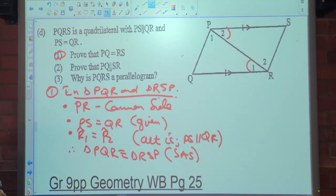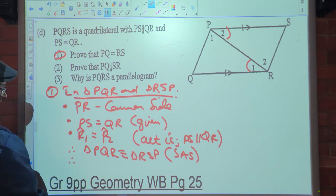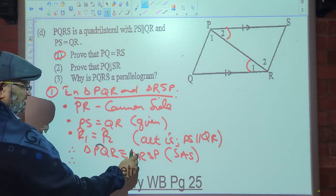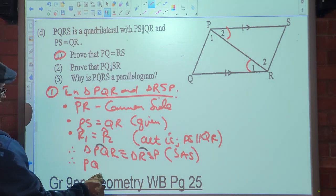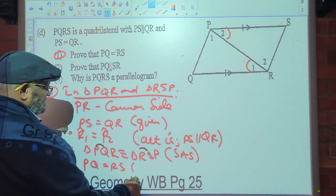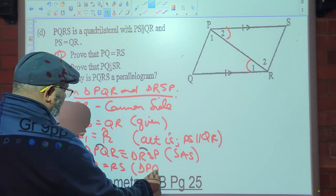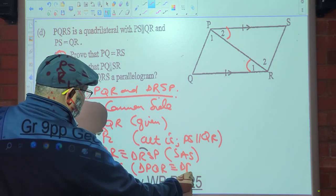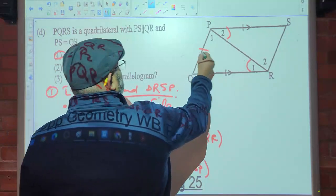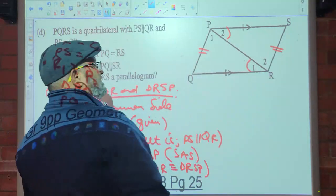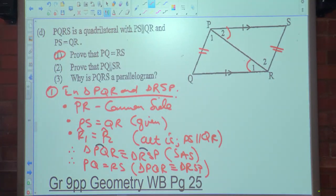Have we answered the question? No. Therefore PQ is equal to RS — why? Because triangle PQR is congruent to triangle RSP. I'm going to fill this in here as I may need it in the next calculation. Any issues here?